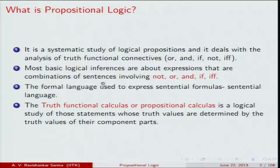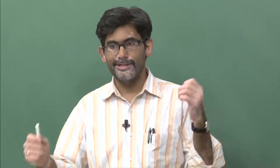The most basic logical inferences are about expressions that combine sentences using not, or, and, if, and if and only if. It is very difficult to connect two sentences without using logical connectives. For example, 'this is a chalk piece or this is a duster' is P or Q; 'this is a chalk piece and this is a duster' is P and Q. Atomic propositions — like P, Q, R — cannot be reduced further. They combine with logical connectives to form complex or compound formulas.